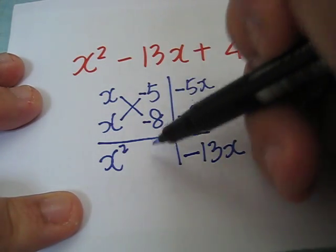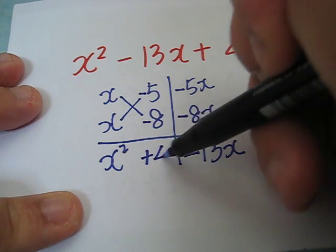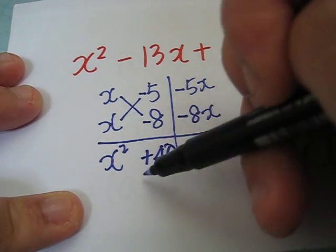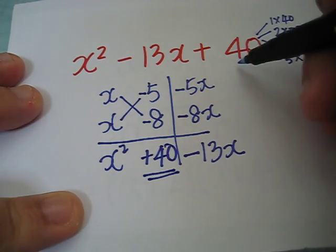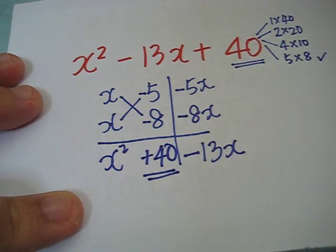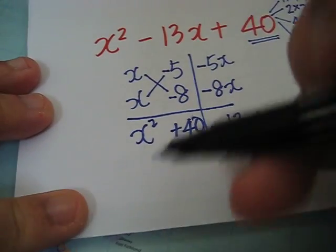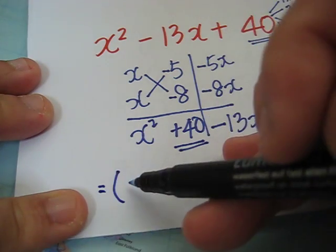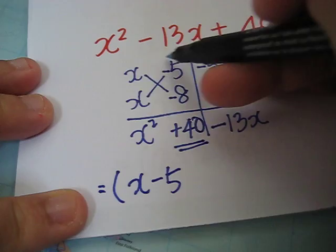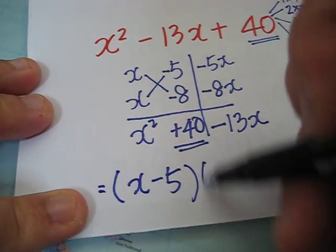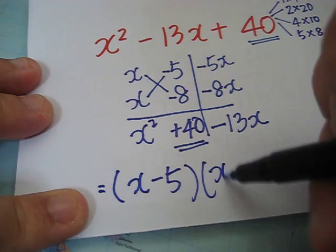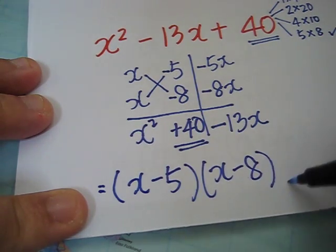Negative 5 times negative 8 will give us positive 40. Let's check. Correct. Therefore, when factorized, we will get x minus 5, which is here, and this one, x minus 8.